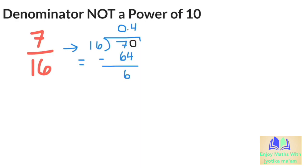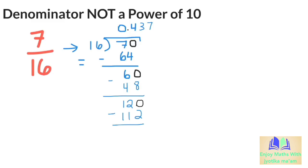16 can't go into 6, so we add another 0. Now 16 goes into 60, 3 times, since 3 times 16 is 48, leaving us with a remainder of 12. Adding another 0, we know that 16 goes into 120, 7 times. 7 times 16 is 112, leaving us with another remainder of 8.